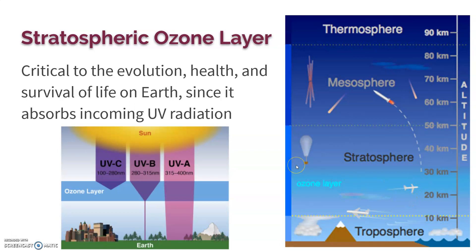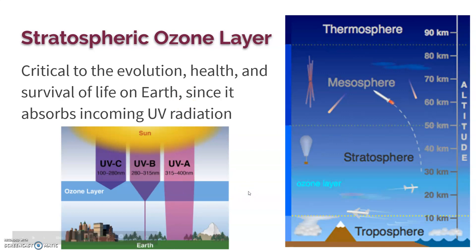The ozone layer's main purpose is to absorb UV radiation before it can get to Earth. If we break UV radiation into different frequencies, the most damaging is UV-C and UV-B, and fortunately that's what is absorbed the most. If we didn't have that, we'd see a much higher concentration of UV radiation, which has damaging effects. There's still some UV-A, which is why you should still wear sunscreen, but it's not nearly as bad as it could be.